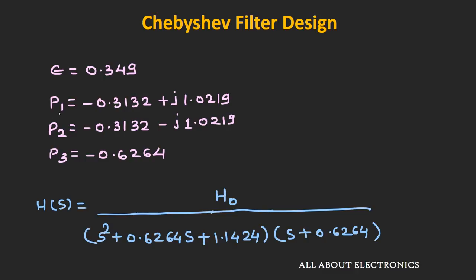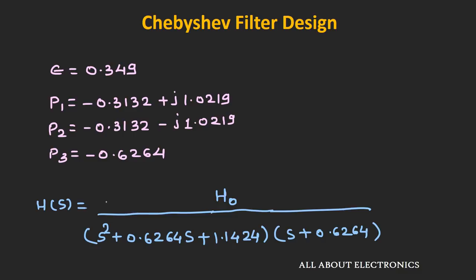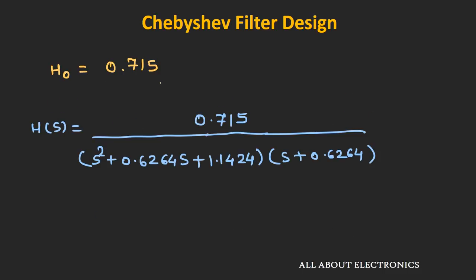Here are the values of epsilon and the different poles. From these poles, we get the transfer function, where H0 represents the value of the transfer function at ω equal to 0. When n is odd (n equal to 3), the transfer function at ω equal to 0 equals 1, giving H equal to 1 and H0 equal to 0.715.